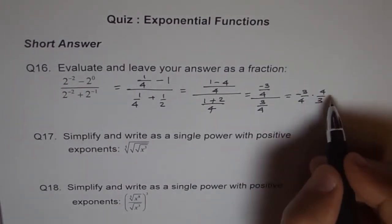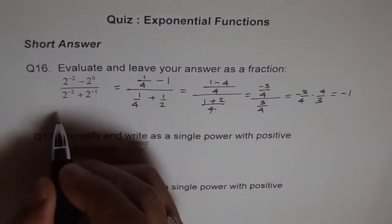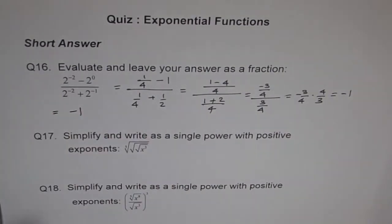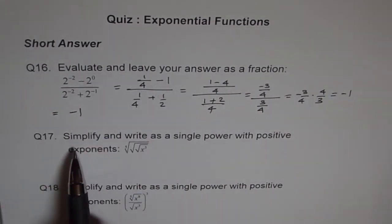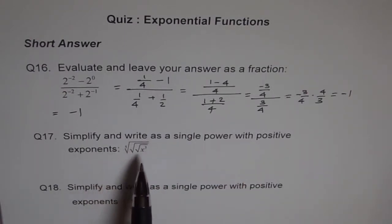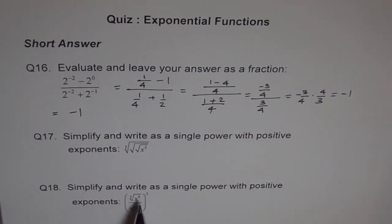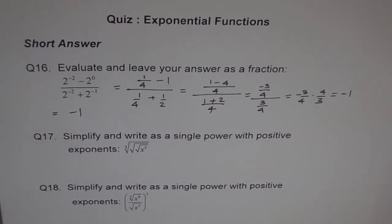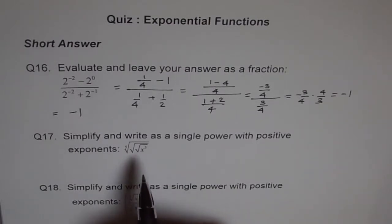This is division, so we multiply: minus 3 over 4 times 4 over 3. They cancel out and we get minus 1. So the answer is minus 1. Now the next type of question says: simplify and write as a single power with positive exponents. These involve radical functions which you need to simplify and write as a single power.